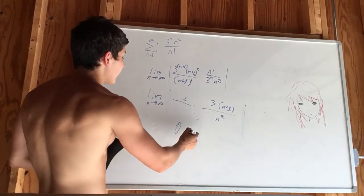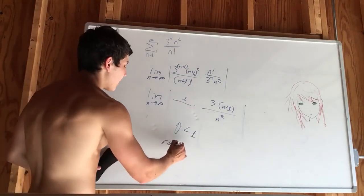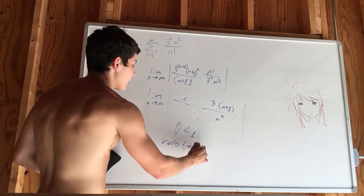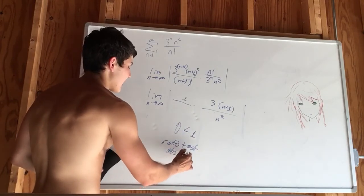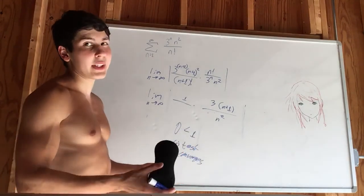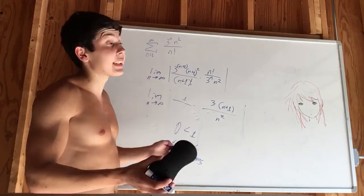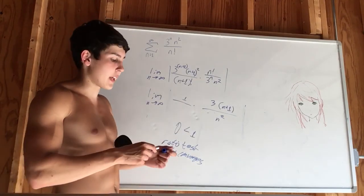And 0 is less than 1. So by the ratio test, this absolutely converges. This absolutely converges because we had something less than 1. If we had something greater than 1, it would diverge. If we had something equal to 1, we would be inconclusive and we would have to do another test.